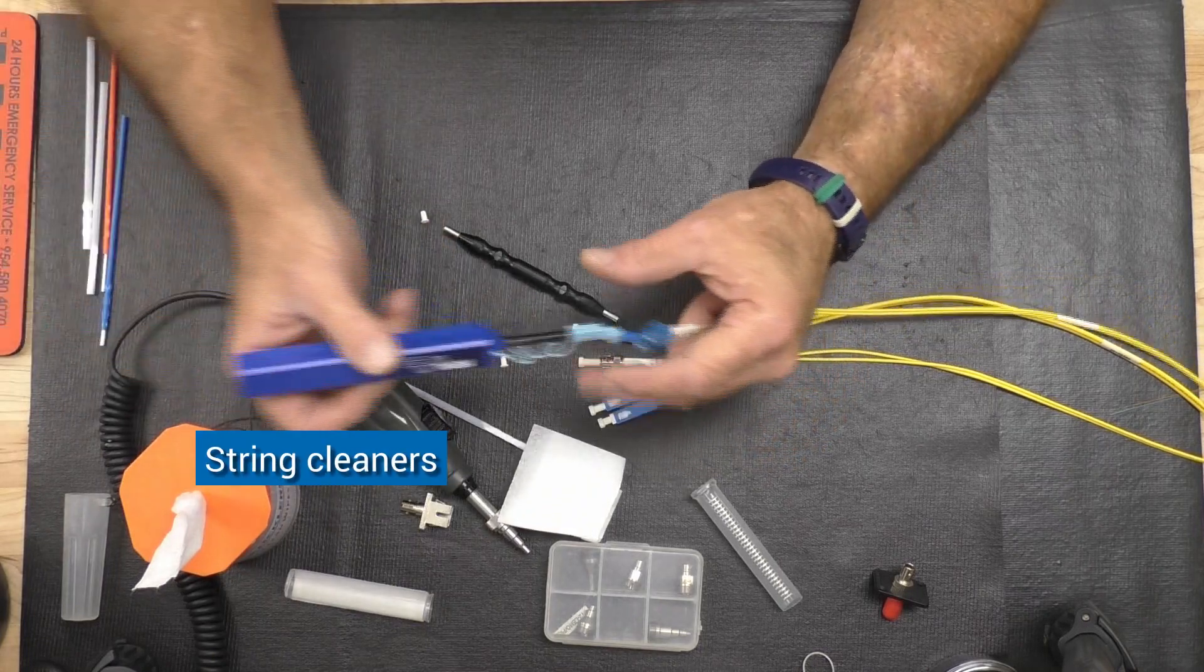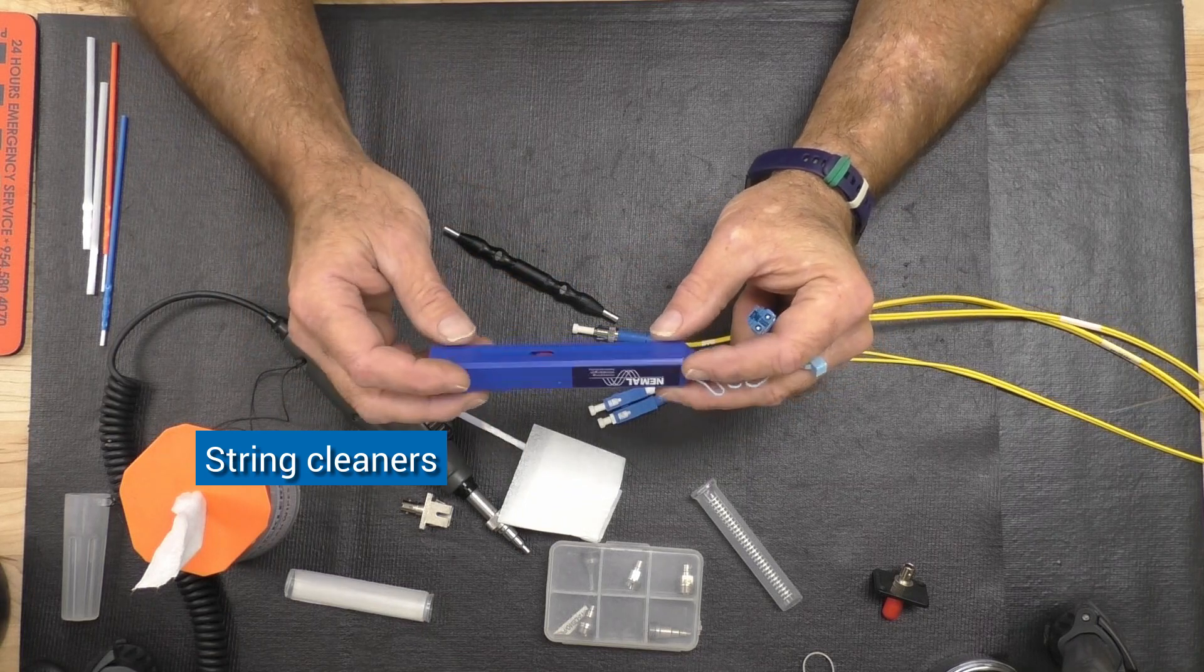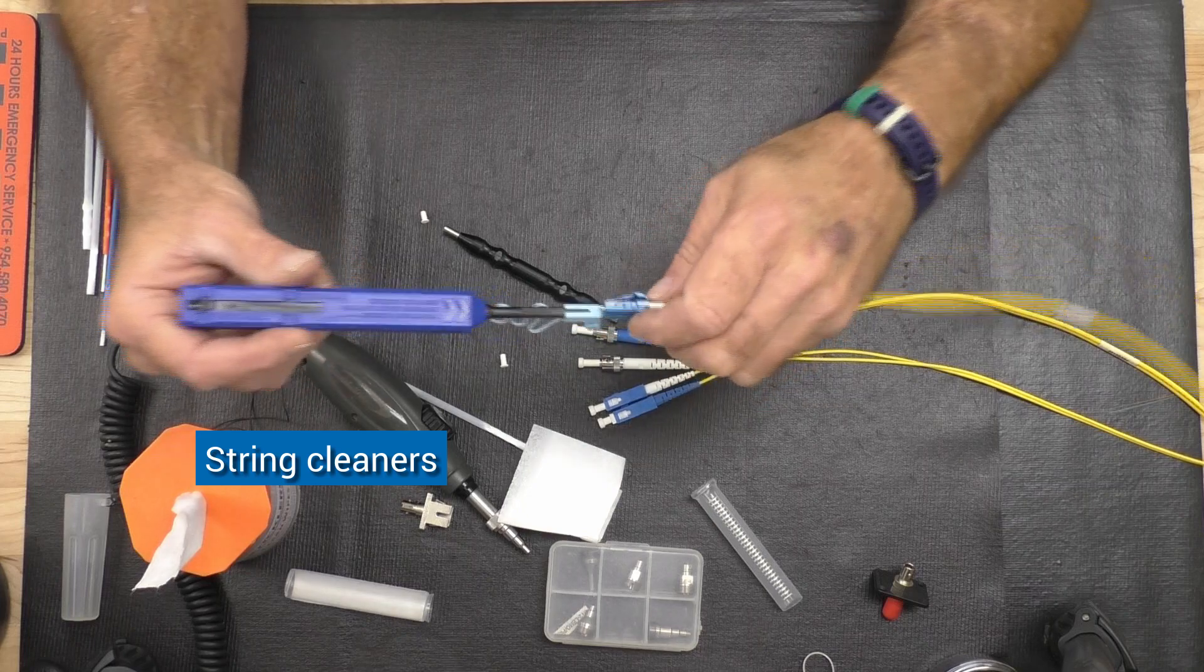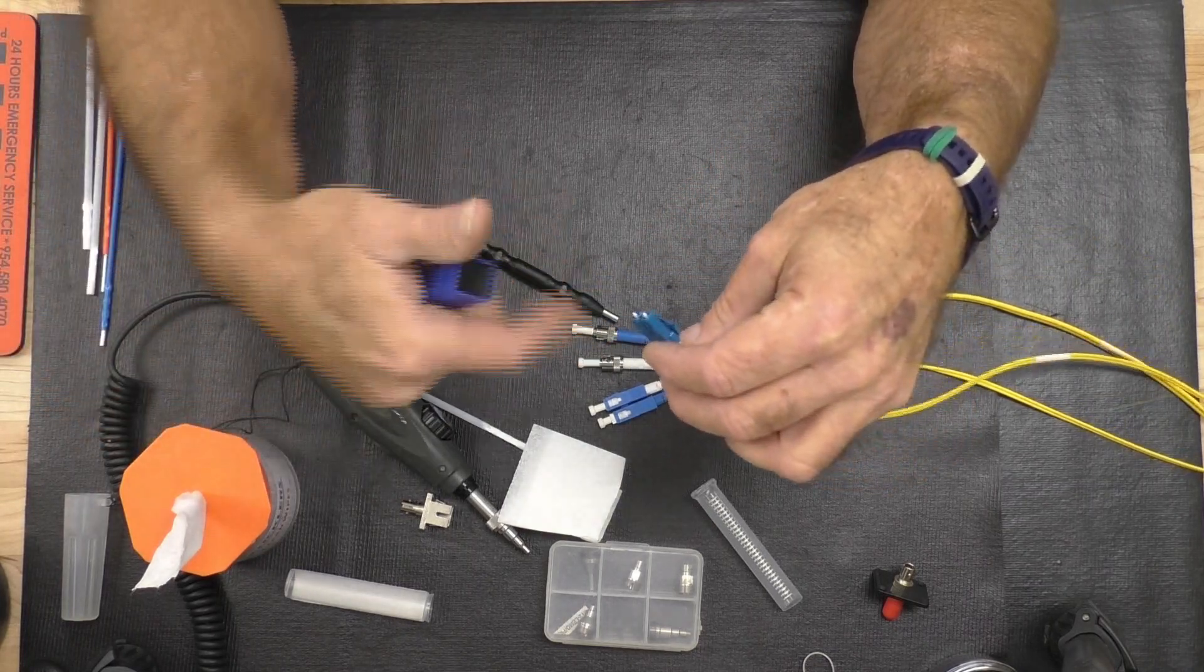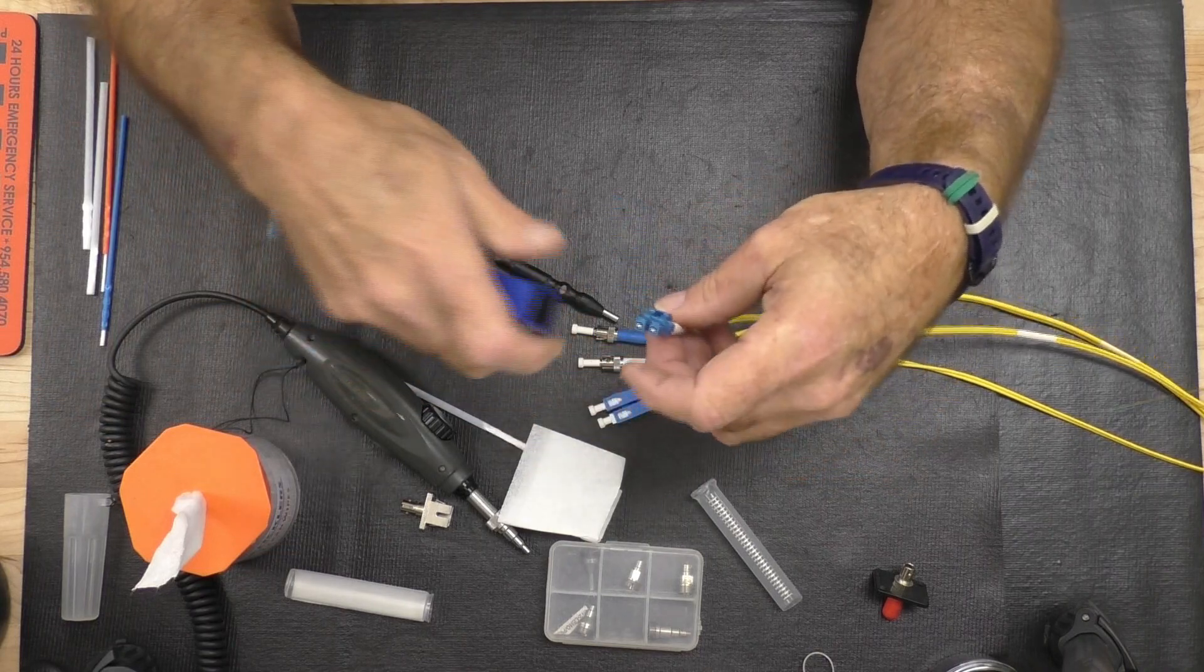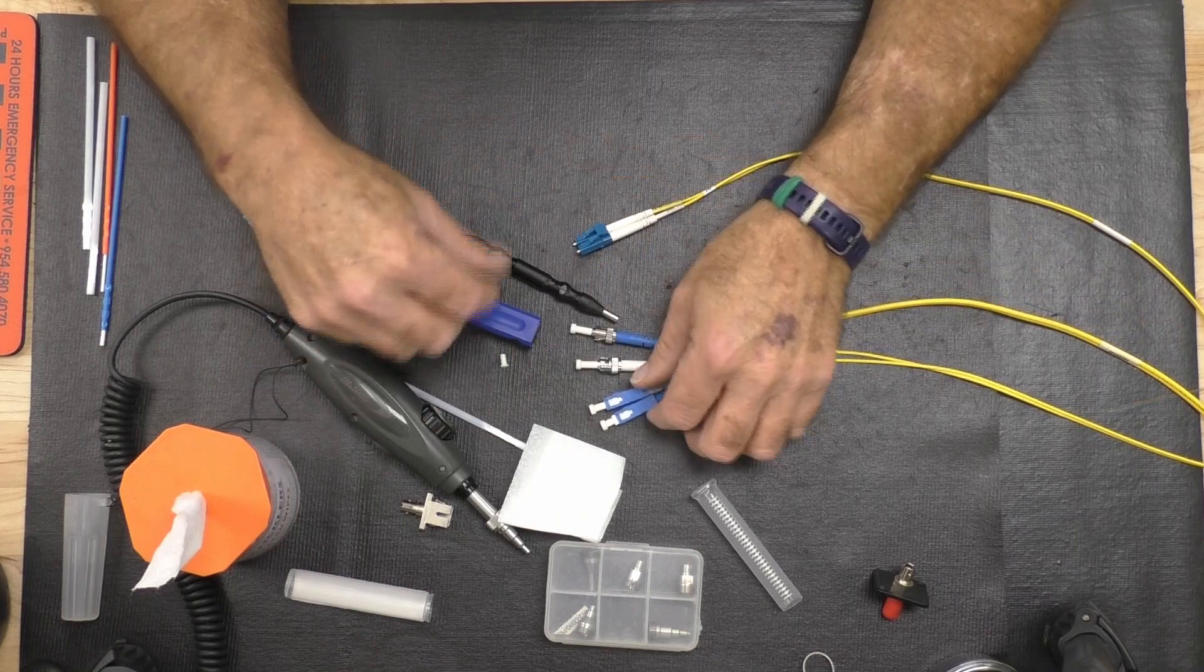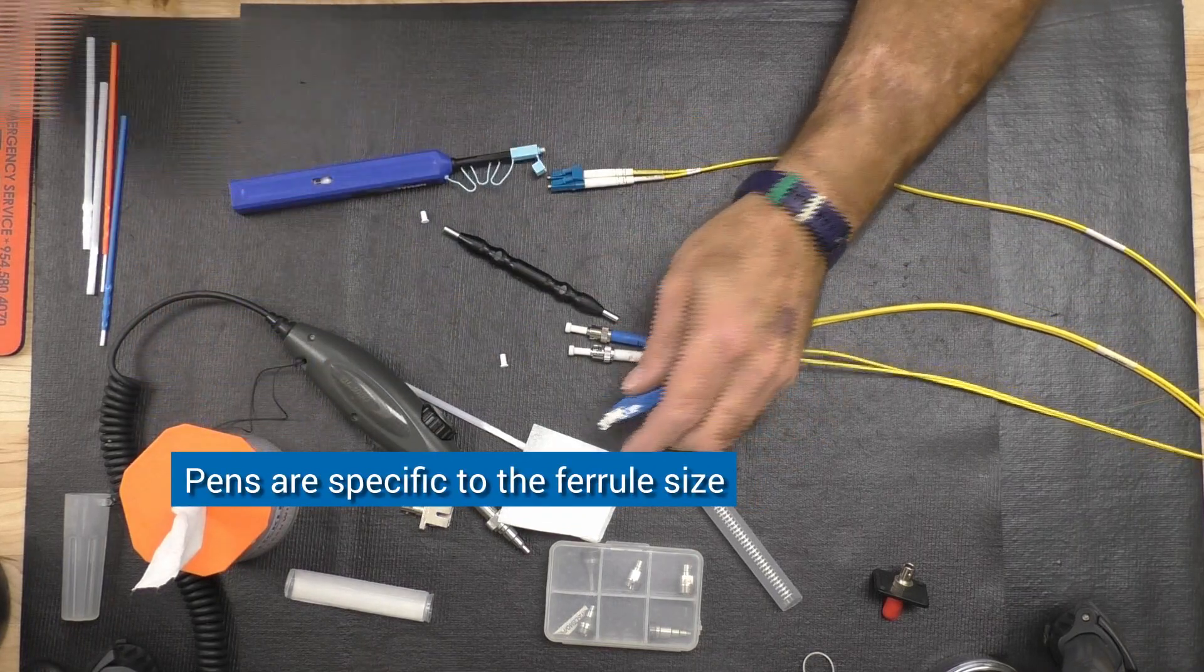Another option: string cleaners. String cleaners are basically dental floss string inside of a pen with an aligning tip that allows you to center over the contact, reaching up inside and snap, basically pulling string over the center of the contact to clean it.